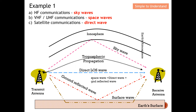For satellite communication, the mode is mainly direct wave only. A satellite is hundreds or thousands of kilometers above the earth, so you can't guarantee that a ground reflected wave will reach it. Typically for satellite communication we tilt the antenna straight up to the sky and the radio wave propagates directly to the satellite. This is called direct wave, which is mainly used for satellite communication. That concludes example one.